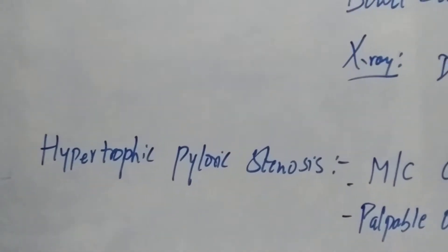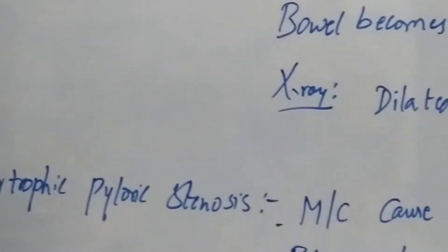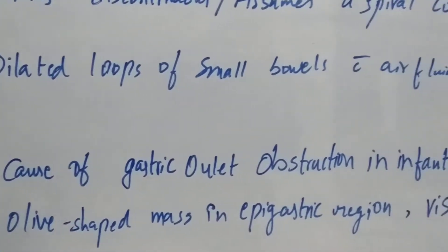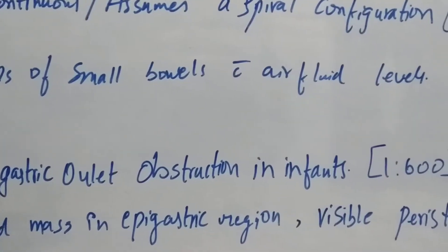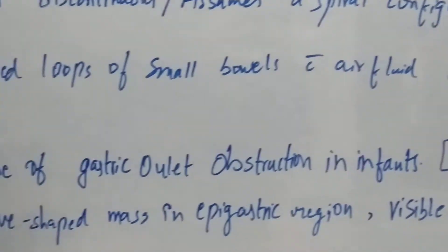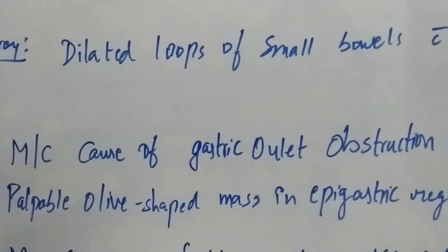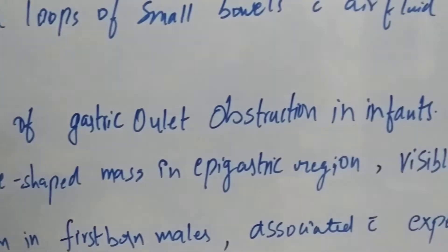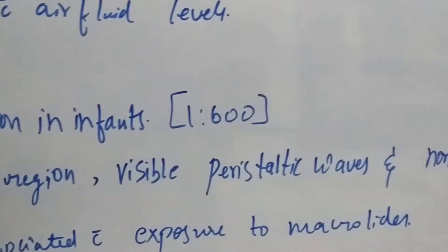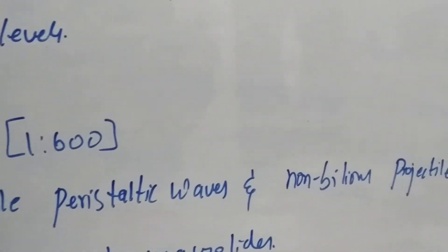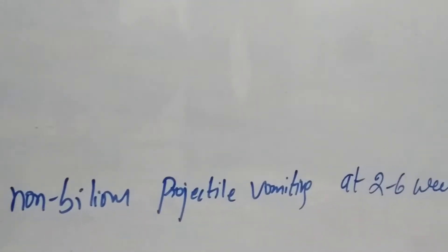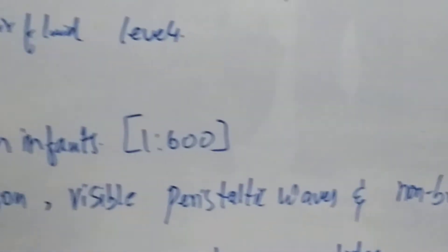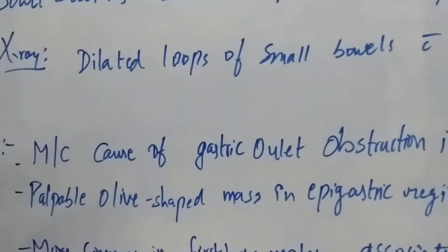Hypertrophic pyloric stenosis is the most common cause of gastric outlet obstruction in infants, with a ratio of 1 in 600. It presents with a palpable olive-shaped mass in the epigastric region, visible peristaltic waves, and non-bilious projectile vomiting at 2 to 6 weeks old.